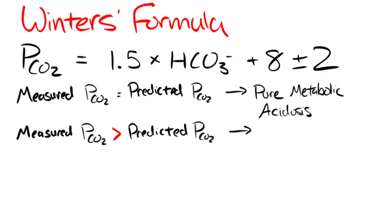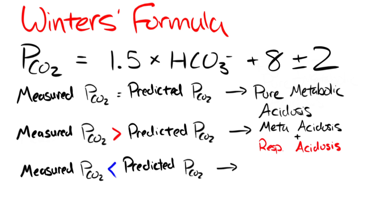The second condition is that your measured PCO2 is greater than your predicted PCO2 and this denotes a metabolic acidosis with another primary respiratory acidosis. The last scenario is that your measured PCO2 is less than the predicted PCO2 and here you have a metabolic acidosis with another primary respiratory alkalosis.